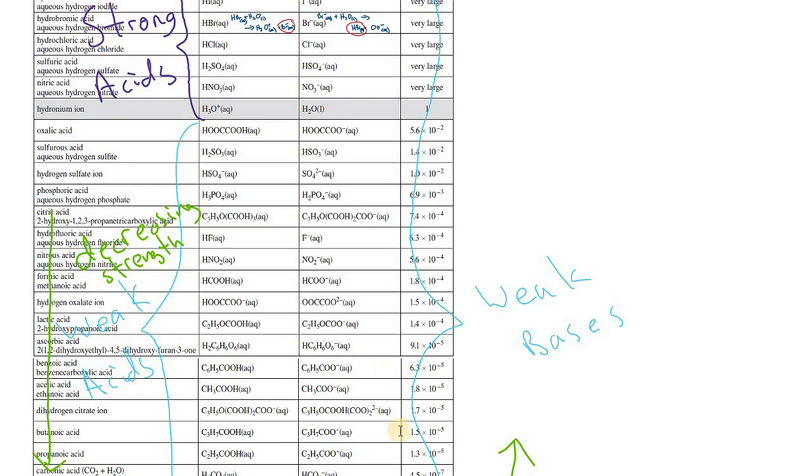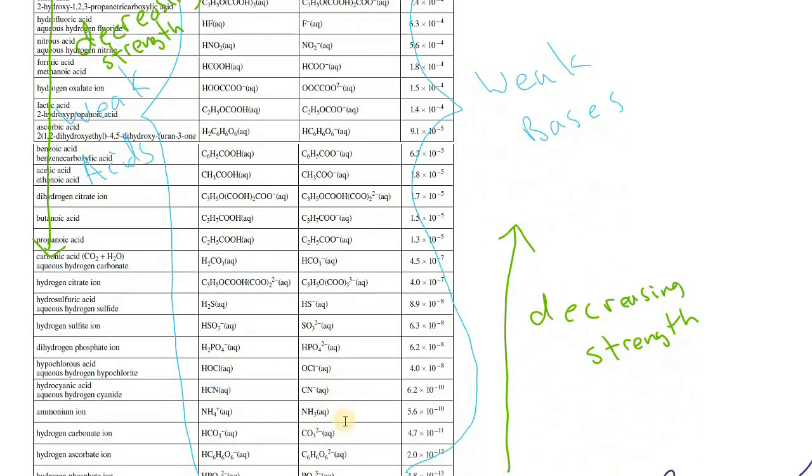And the same thing applies for bases in the other order. So we can take any one of these ions here. One closer to the bottom, like ammonia, is a stronger base than anything we'll find further up on the table. Because they get weaker as we go up.